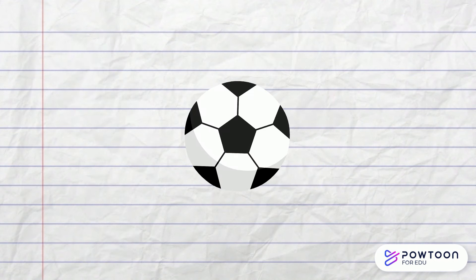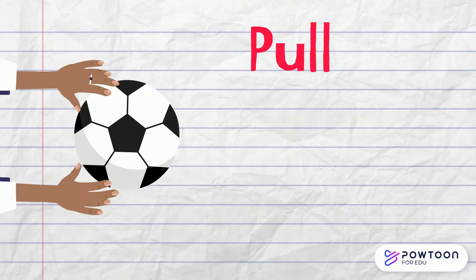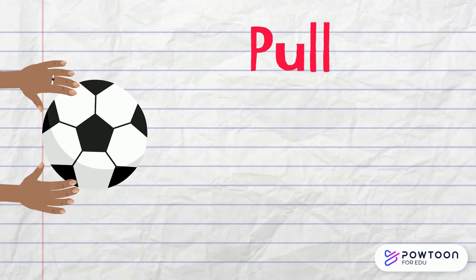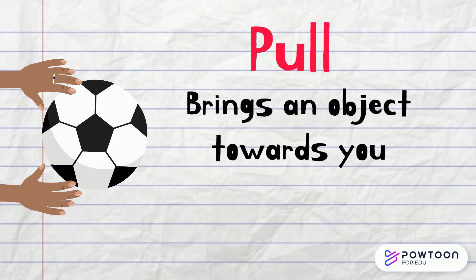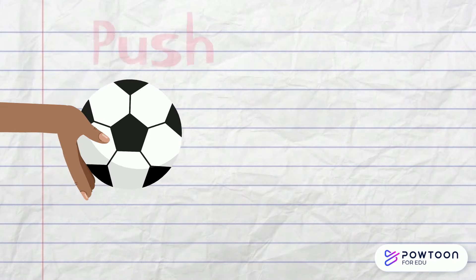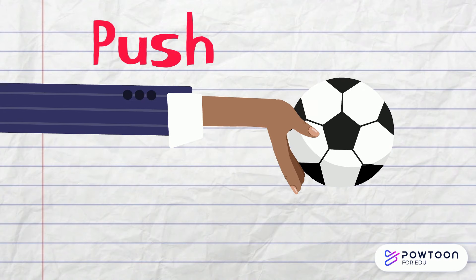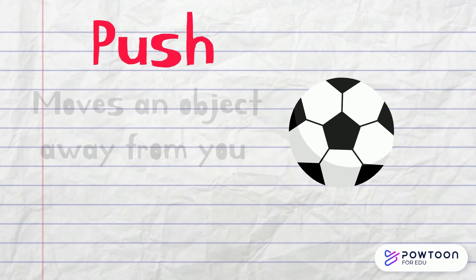Take this bull for example. Let's see the different types of forces applied. Pull is when you bring an object towards you, whereas push moves an object away from you.